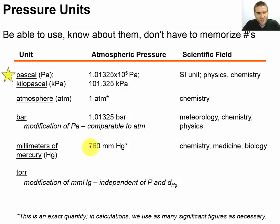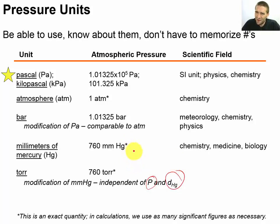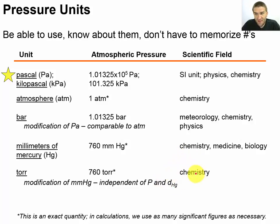Torr is a modification of millimeters of mercury and is the same size unit. The difference is that liquids can compact or expand slightly under very different pressures, and their density changes with temperature. So the torr was created to take out the mercury-specific temperature and pressure dependence, giving a cleaner definition. Torr is used a lot in chemistry and biology, and also frequently in flight planning and aeronautics, so you'll encounter it if you're ever involved in piloting or aerospace.